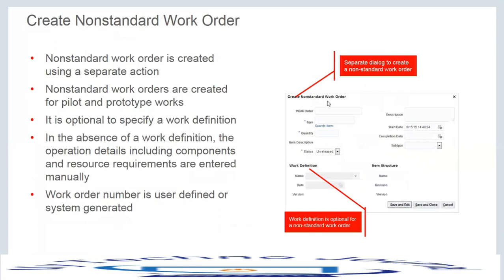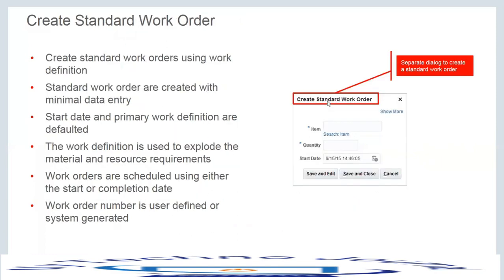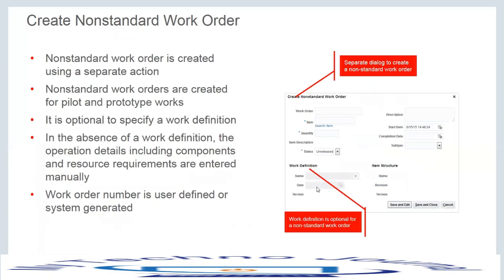For a non-standard work order, the work definition is optional. For a standard work order, the product itself has its own work definition, and all data from it is populated onto the work order automatically. Non-standard work orders — used for rework, repair, disassembly, and similar purposes — allow you to decide which components, operations, and resources to include, either leveraging an existing work definition or defining them from scratch.